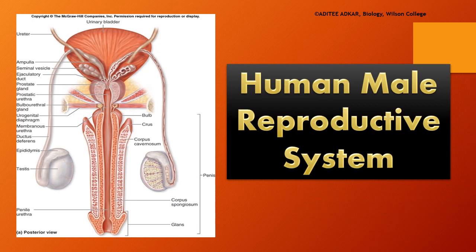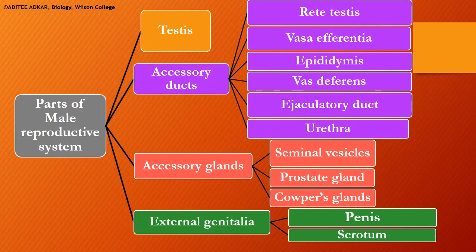Let us understand the structure of the male reproductive system of man. The male reproductive system can be broadly divided into these parts. First of all, the testes, which are the male gonads or primary sex organs of the male. Then, the accessory ducts — tubular structures which will help in the transportation of semen and the transportation of the male gametes.